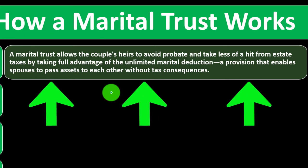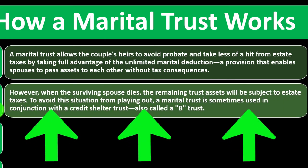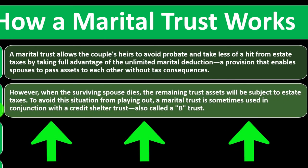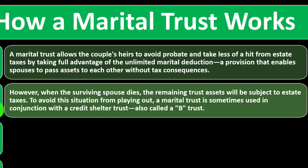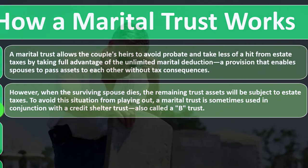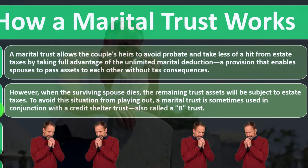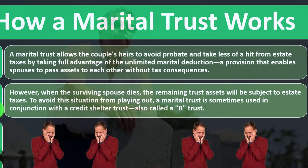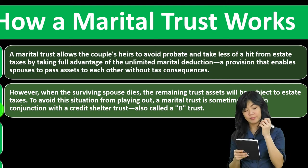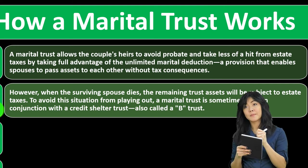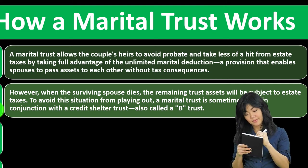This provision enables spouses to pass assets to each other without tax consequences. However, when the surviving spouse dies, the remaining trust assets will be subject to estate taxes. That's when the full married entity is gone, and you would expect the estate tax to apply. You want to be structured so you're not hit with estate taxes prematurely — for example, when just one spouse dies.